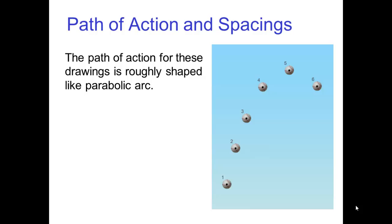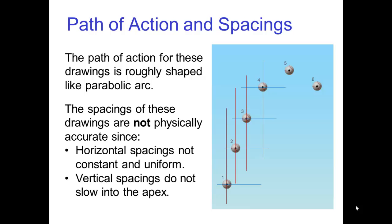Finally, it's possible to have a path of action that has the right shape, yet have the wrong timing and spacing. For example, the path of action for these drawings is roughly shaped like a parabolic arc. However, the spacings for these drawings are not physically accurate since the horizontal spacings are not constant and uniform. Furthermore, the vertical spacings do not slow into the apex.